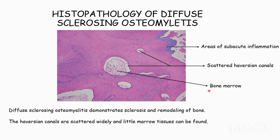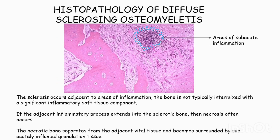Although the sclerosis occurs adjacent to the areas of inflammation, the bone is typically not intermixed with a significant inflammatory soft tissue component.